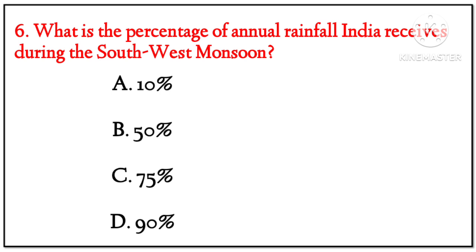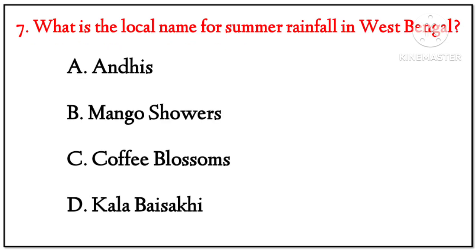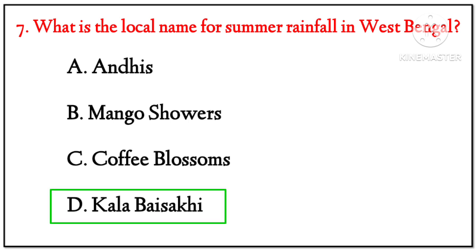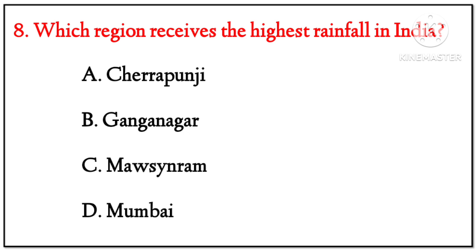(6) What percentage of annual rainfall does India receive during the southwest monsoon? Options: 10%, 50%, 75%. Answer: 75%. (7) What is the local name for summer rainfall in West Bengal? Options: Andhi, Mango Showers, Coffee Blossom, Kalbaisakhi. Answer: Kalbaisakhi.